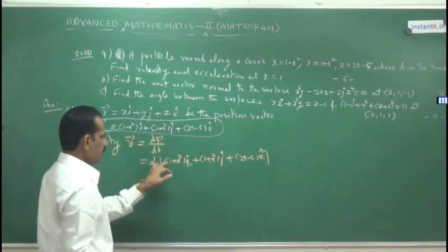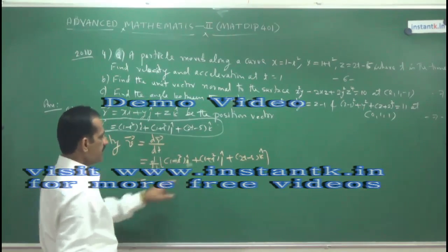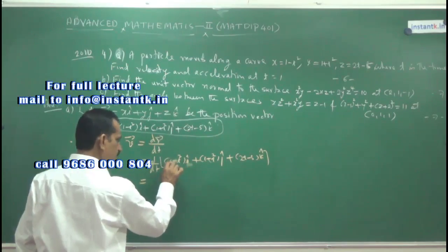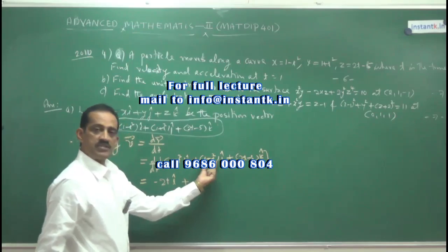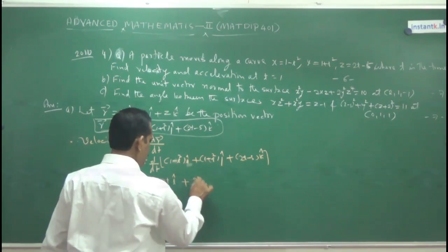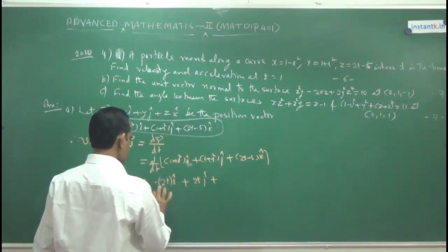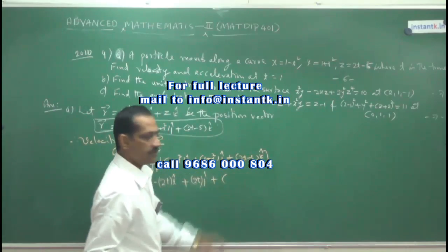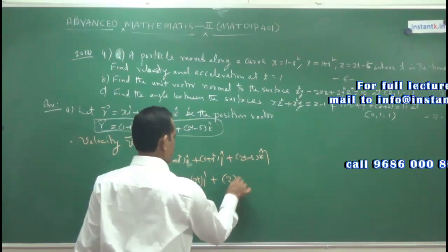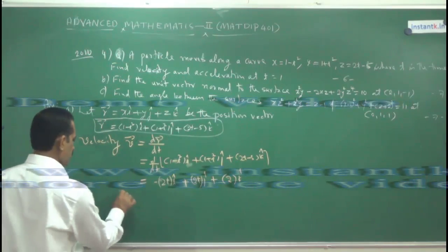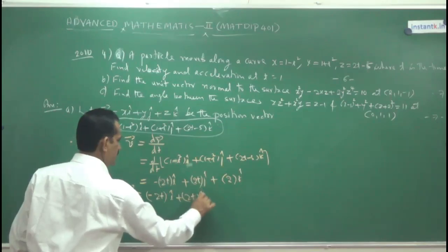Differentiate: the derivative of (1 - t²) with respect to t — i is constant, derivative of 1 is 0, derivative of t² is 2t, so we get -2t·î. The derivative of (1 + t²) — derivative of 1 is 0, derivative of t² is 2t, so we get +2t·ĵ. The derivative of (2t - 5) — derivative of 2t is 2, derivative of 5 is 0 — so we get +2k̂. Therefore, velocity = -2t·î + 2t·ĵ + 2k̂.